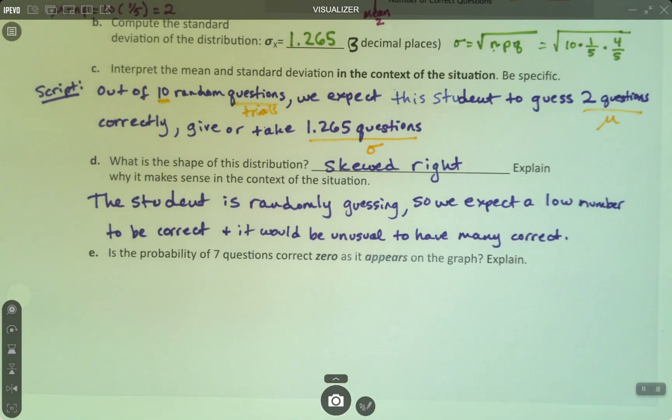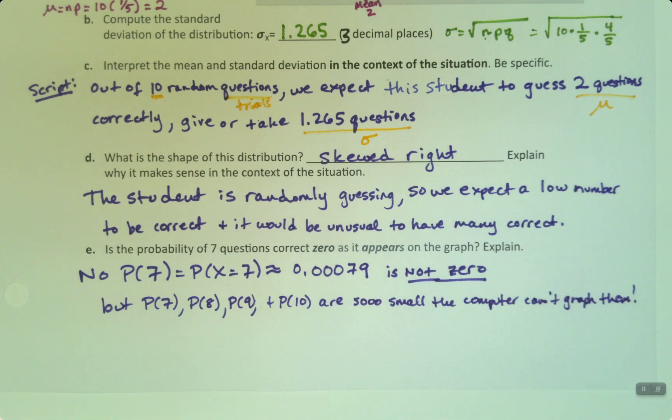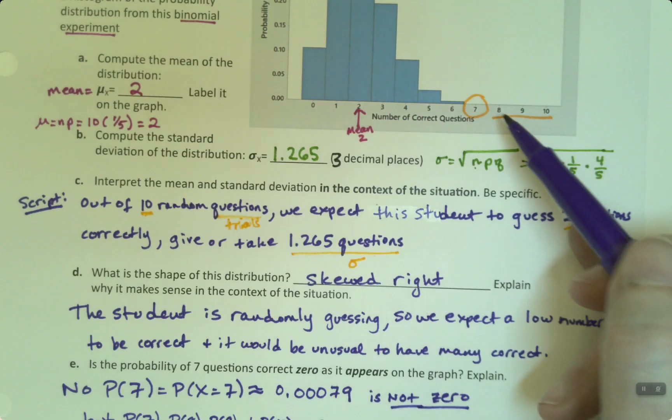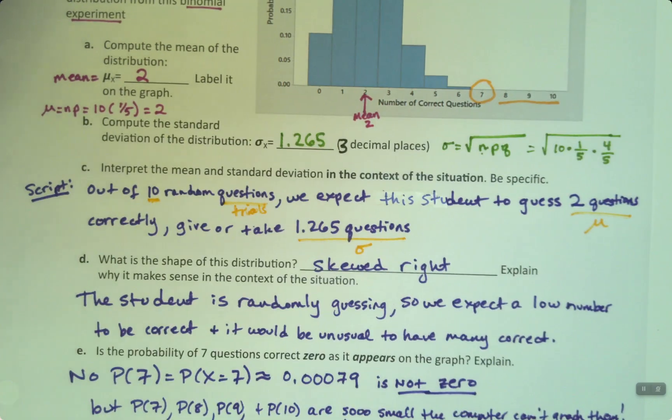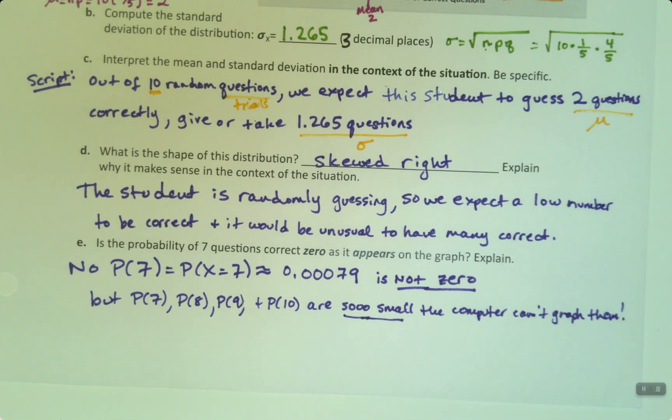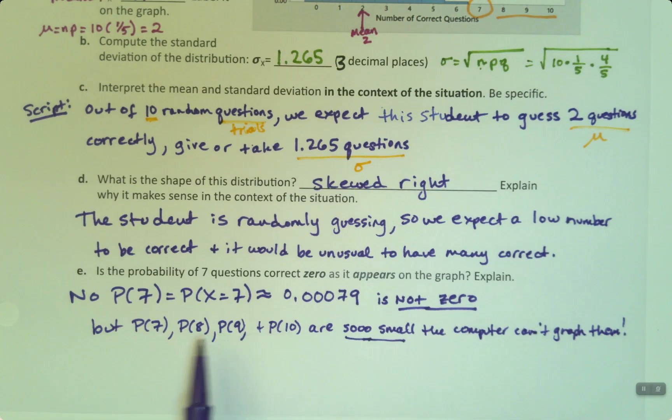Extremely unlikely that a student would randomly guess all ten questions correctly. But the probability of seven is not nothing, it's just really low. So low that the graphing utility that I'm using to make this graph, which is actually not StatCrunch, it's a different program, doesn't even bother to put a bar or a dot or anything on these values. They're just that small. But they're not zero. So the probability of seven, I just found it in StatCrunch, it's the probability that x equals seven, it's .00079, roughly. It's not zero. But what's happening is the probability of seven, and for that matter, the probability of eight, nine, and ten, are all so small, so very small, that the computer can't graph them.